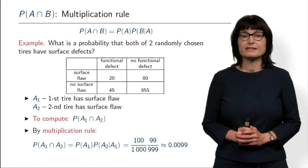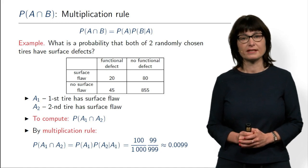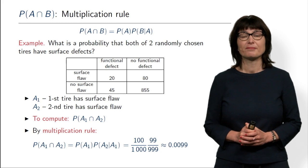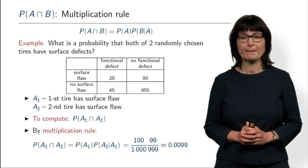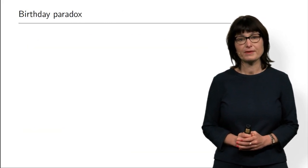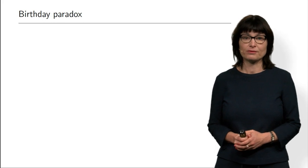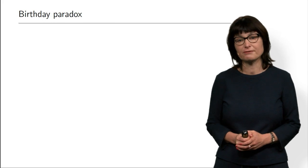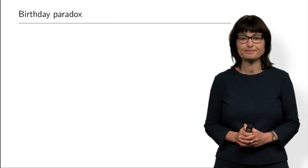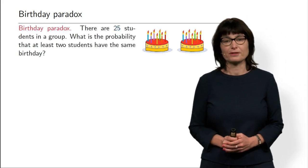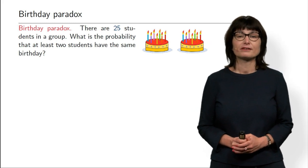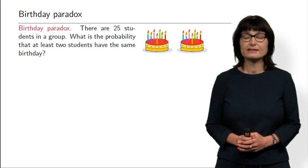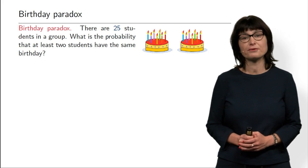As I said, the multiplication rule extends to multiple events. I want to demonstrate that with a very interesting problem called the birthday paradox. I will first explain the problem on this birthday example, and then tell you about different applications of this very simple model. So what is the birthday paradox about? Assume there are 25 students in a group — what is the probability that at least two students have the same birthday?